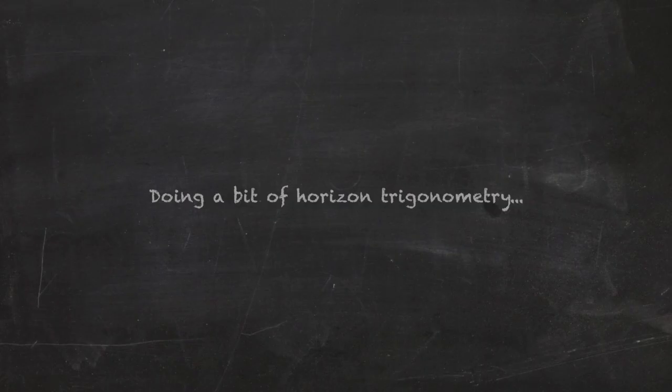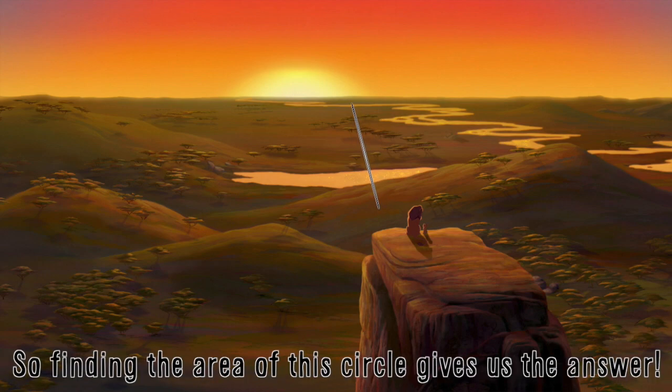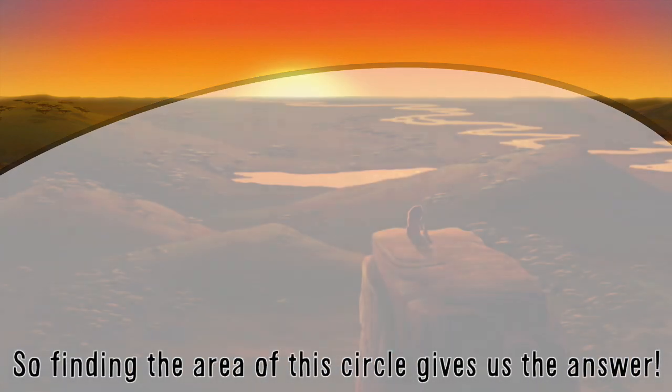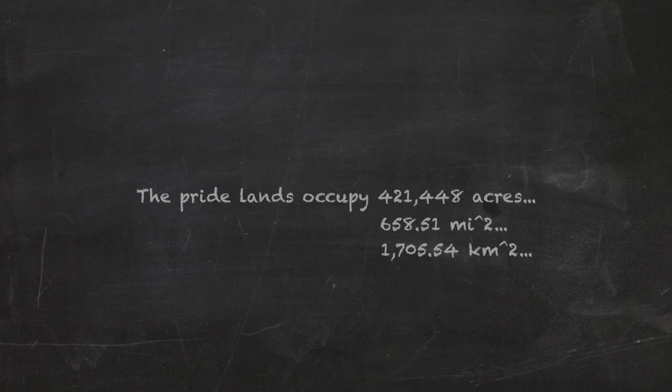Doing a bit of horizon trigonometry, I discovered that the Pride Lands have a radius of 23.3 kilometers or 14.48 miles. So finding the area of this circle gives us the answer. The Pride Lands occupy 421,448 acres, about 658.51 square miles, or around 1,705.54 square kilometers.